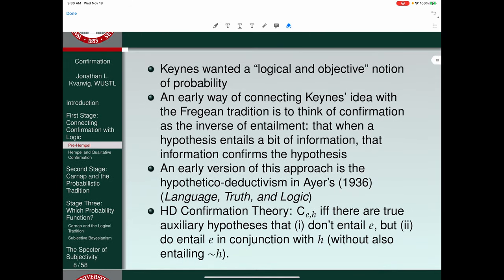So here's Ayers' theory, the hypothetical deductive confirmation theory. A confirmation relation between E and H holds if and only if there are true auxiliary hypotheses that don't entail E but do entail E in conjunction with H without also entailing not H. So the latter parenthetical is to make sure that we have consistency here. But notice the relation between confirmation and entailment. You get entailment in one direction giving rise to confirmation in the inverse direction.